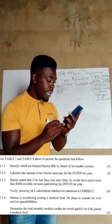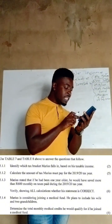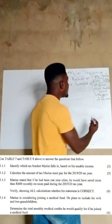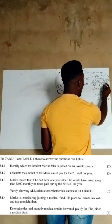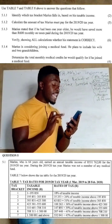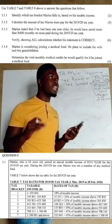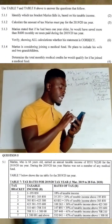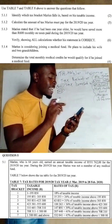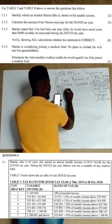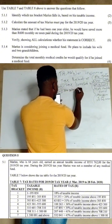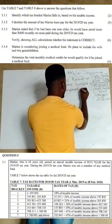Question 5.1.2 asks us to calculate the amount of tax Marius must pay for the 2019/2020 tax year. We go to tax bracket number 4 and write down the rate of tax exactly as it appears: R100,263 plus 36% of taxable income above R423,300.